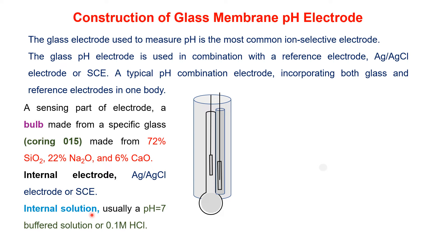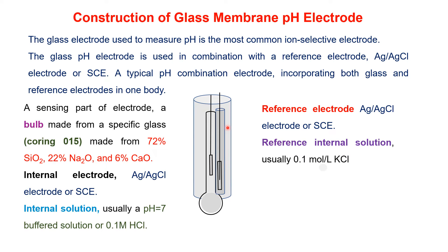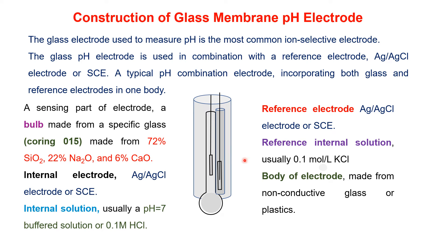The third part is the internal solution, which is either a buffer of pH 7 or a 0.1 molar hydrochloric acid solution filled in the bulb. The reference electrode is either a silver-silver chloride electrode or a calomel electrode. The reference internal solution is 0.1 mol/L potassium chloride, and the body of the electrode is made from non-conductive glass or plastics.